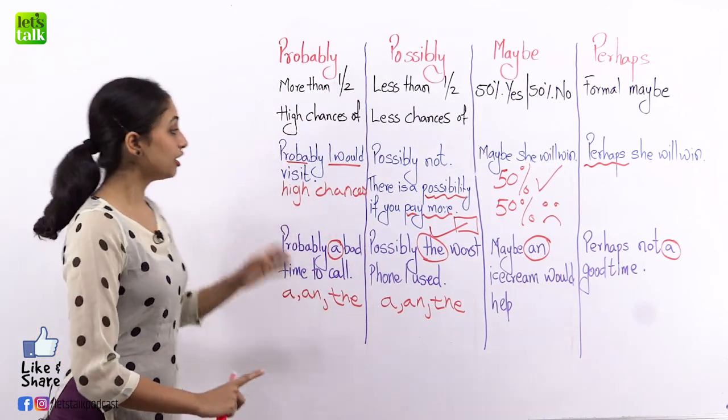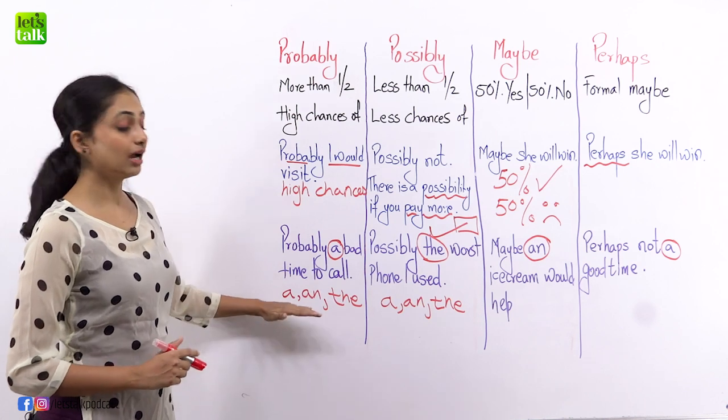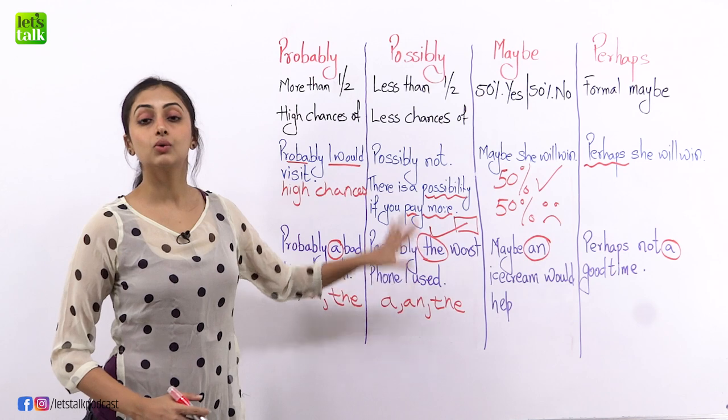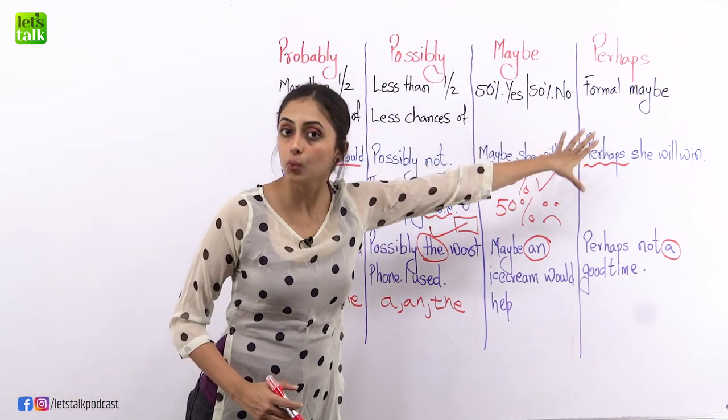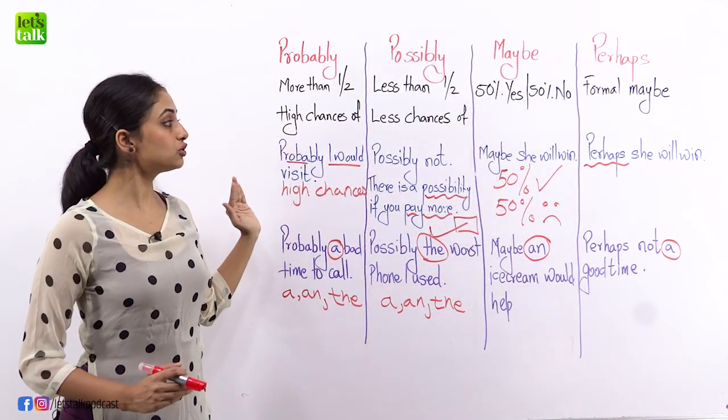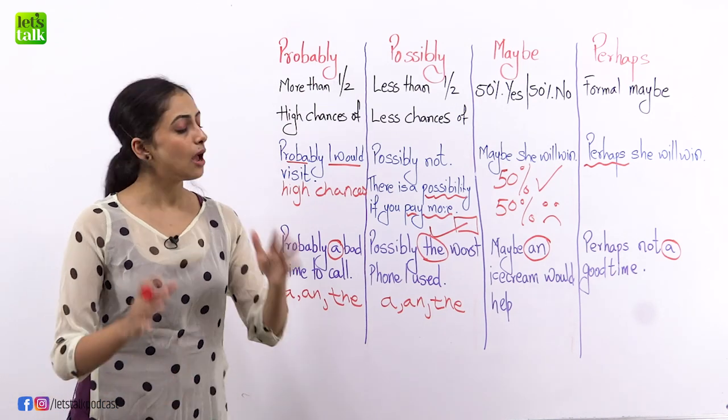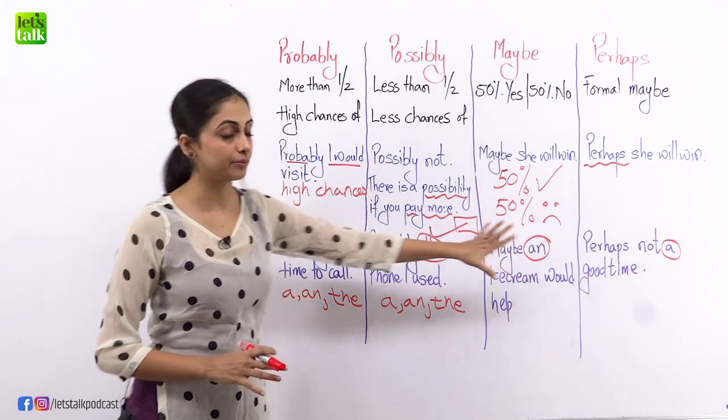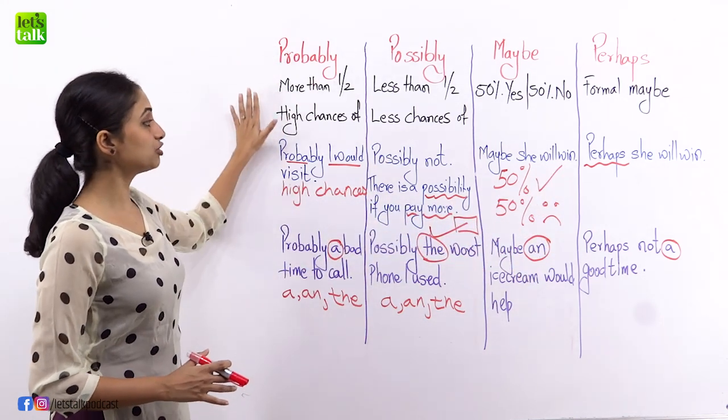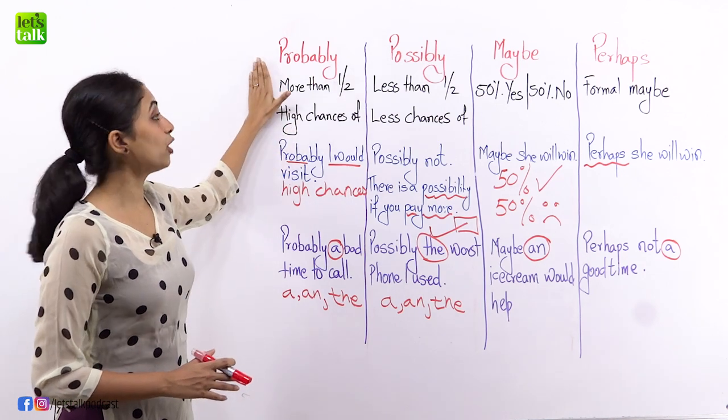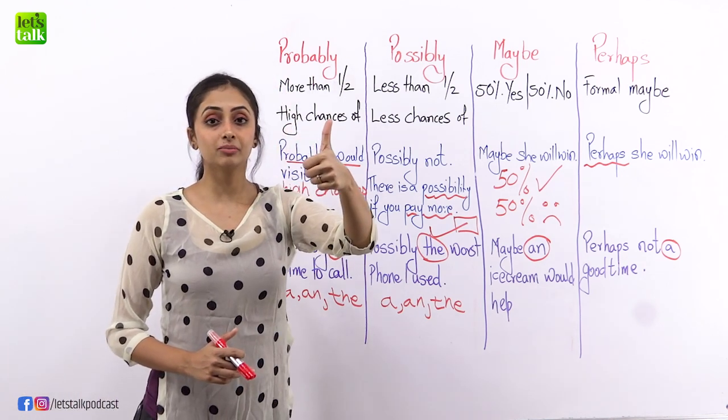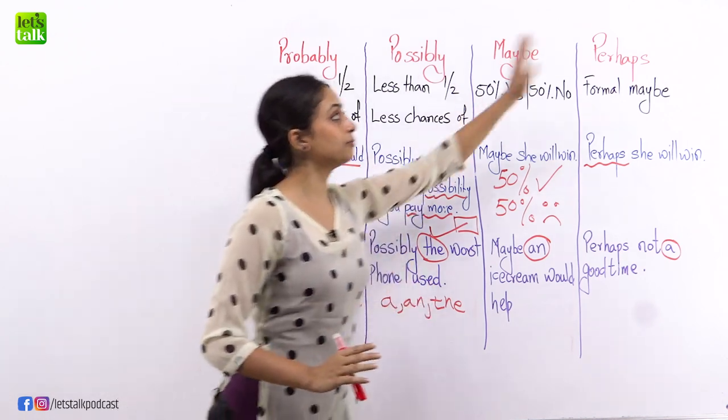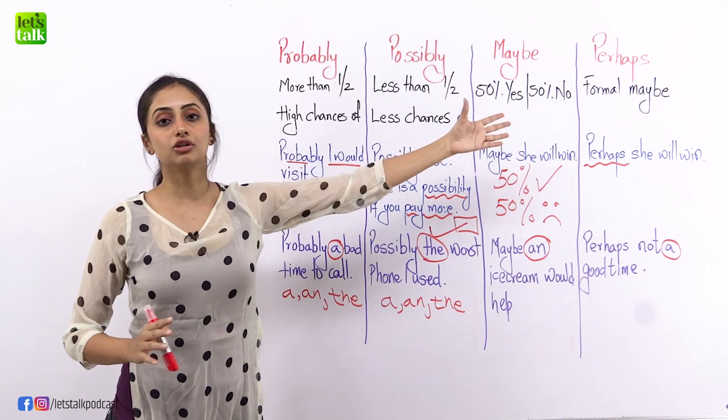Points to remember, you can use words like articles, a and the, whenever you're using any of these four words. You can also make negative sentences but I will make sure that I take a different lesson for it as I don't want you guys to get confused about it. I hope the confusion is now clear where probably is high chances, possibly is less chances, maybe is 50-50% chances and perhaps is the formal version of maybe.